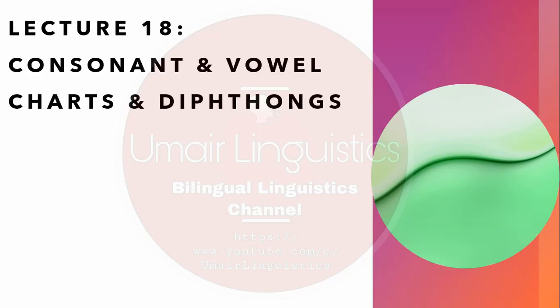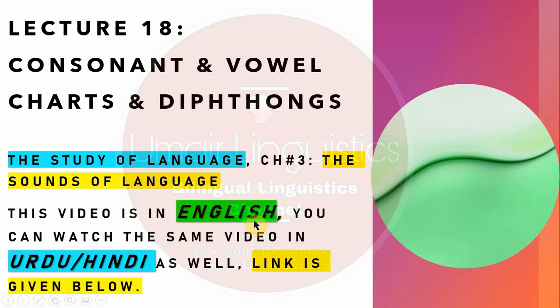In this lecture we are going to discuss the consonant chart, vowels and their charts, and we shall also discuss diphthongs in British and American English. At the end we shall look at some subtle individual variation where we look at some vowels which differ among varieties of English. This video is in English, and I have also added the link for the Urdu version in the description below.